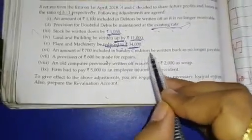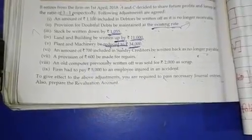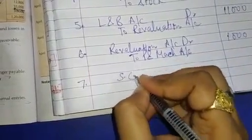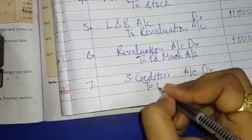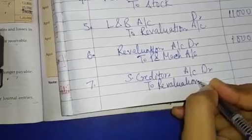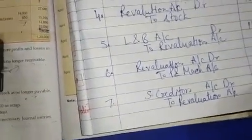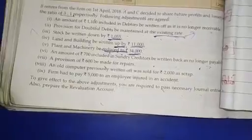Seventh entry: Amount of ₹700 included in sundry creditors returned back and no longer payable। Sundry creditors में ₹700 की ऐसी amount थी जो हमें pay नहीं करनी — means profit हो गया। Profit को credit करते हैं। Entry: Sundry Creditors Account debit to Revaluation Account — ₹700 से।